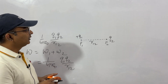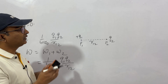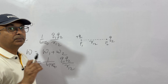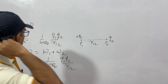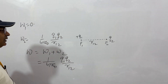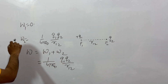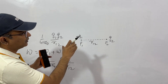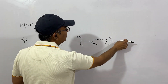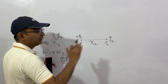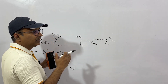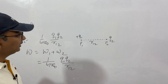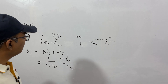In a conservative field, potential energy plus kinetic energy is conserved. The significance of this is: if we know the potential energy and the difference in potential energy, when the system is disturbed — say q2 is displaced from one point to another — the difference in potential energy will go as kinetic energy. We will use this in examples.